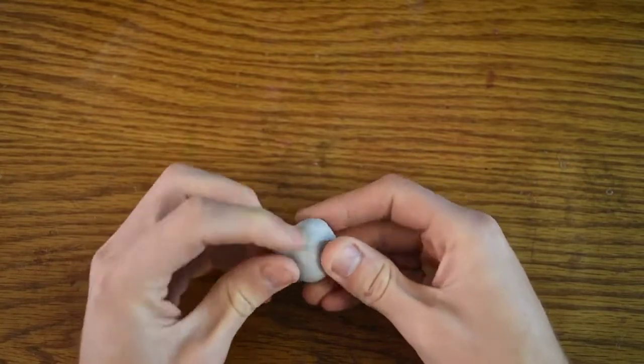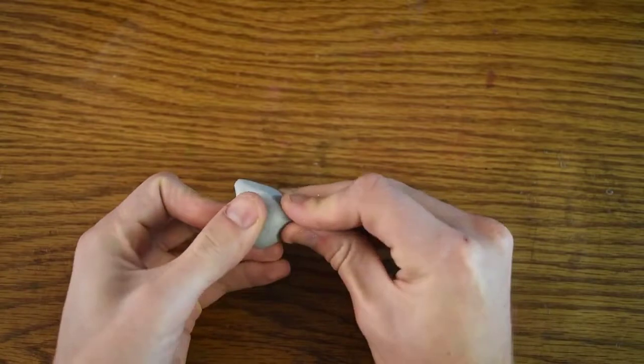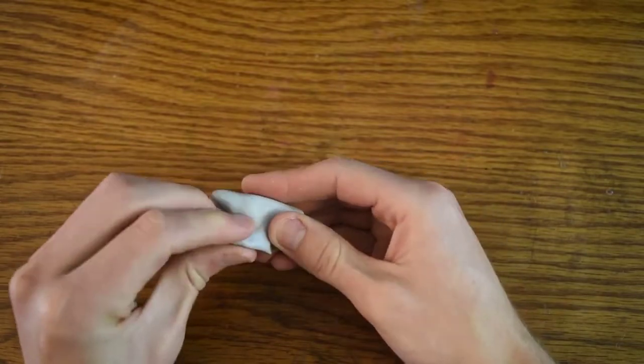We can form the body and arms all in one piece of clay. Keep in mind we want this to look very wavy and liquidy.